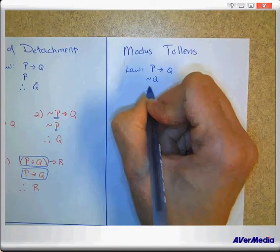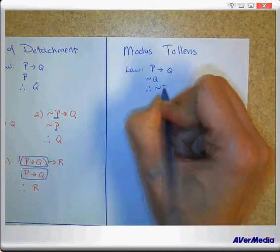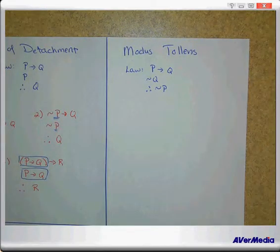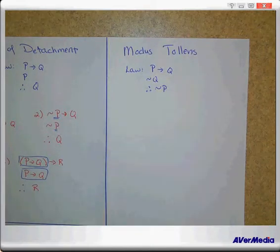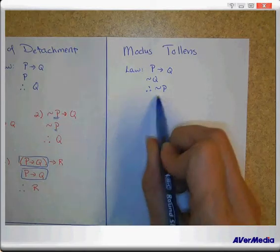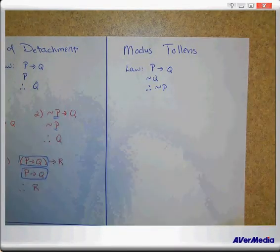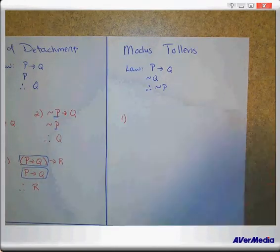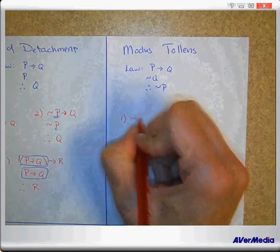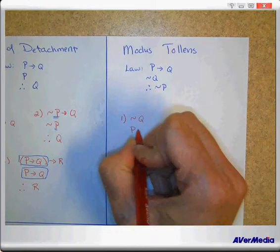So don't forget again, this could look a couple different ways. You could literally have something more like this: if not Q, if P then Q, therefore not P. Or you could have it totally in the opposites. I could have if R then not T. I said, oh, T, therefore not R.